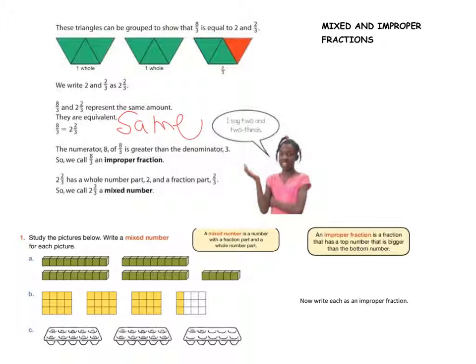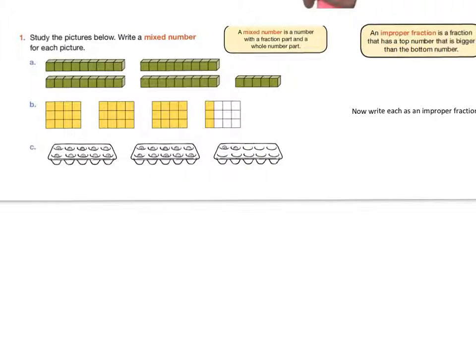Let's take a look here. I'd like you to take a look at each picture. Write the mixed number for each picture. Press pause and do that on your paper now. Alright, let's check if you are on the right track. Let's start with A. As a mixed number, it would have four wholes. So four is a large number — make sure it's large enough that it doesn't look like it's part of the number next to it.